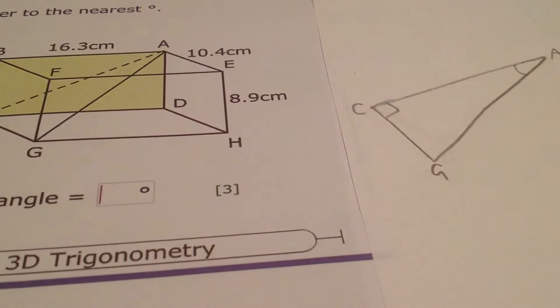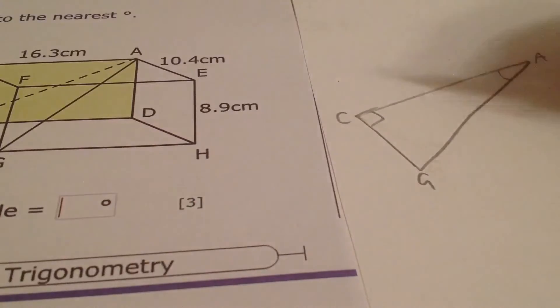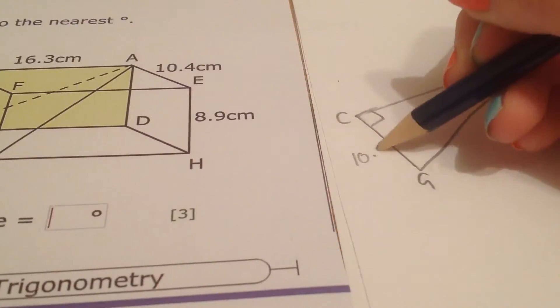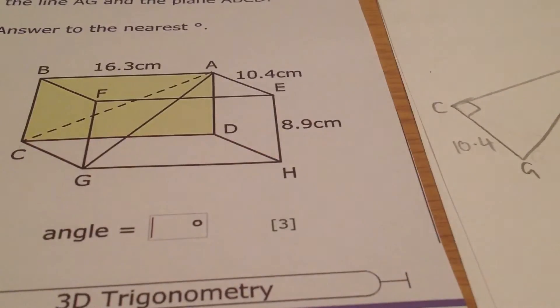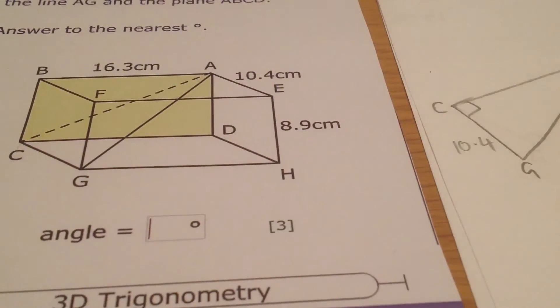What do I know so far? Well, I know CG. CG is 10.4, and I can find AC because it is the diagonal of the back face.